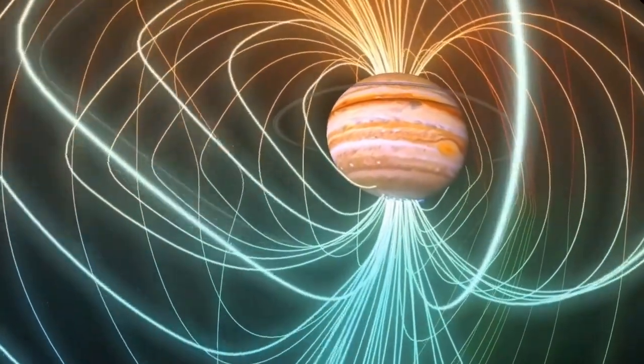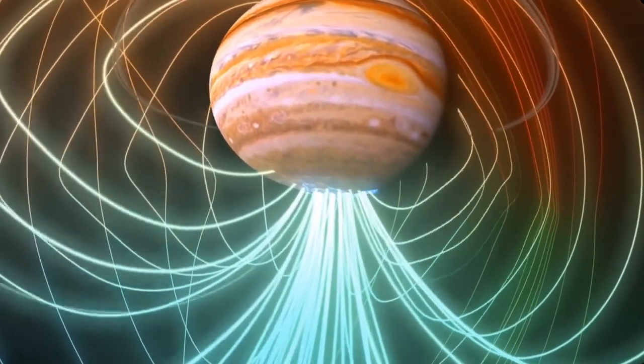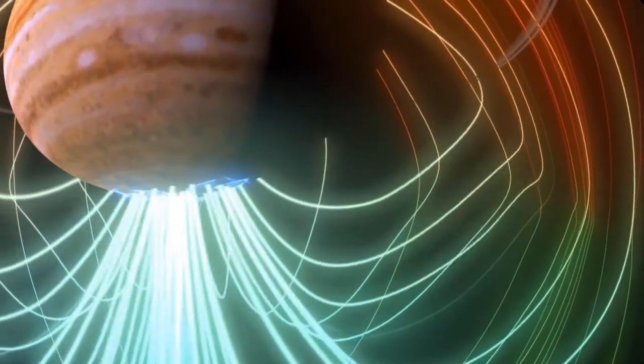Jupiter has metallic hydrogen flowing in its core, creating the dynamo to power a magnetosphere 20,000 times stronger than Earth's.